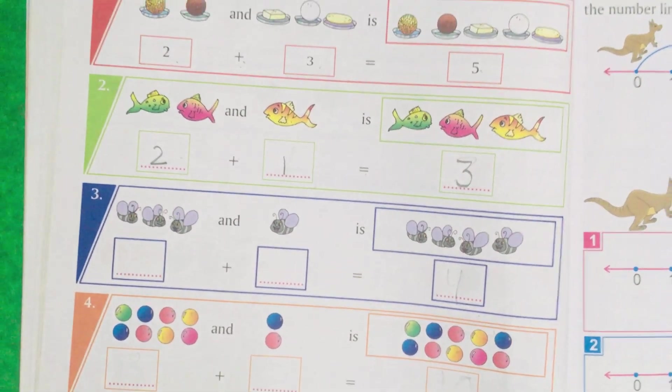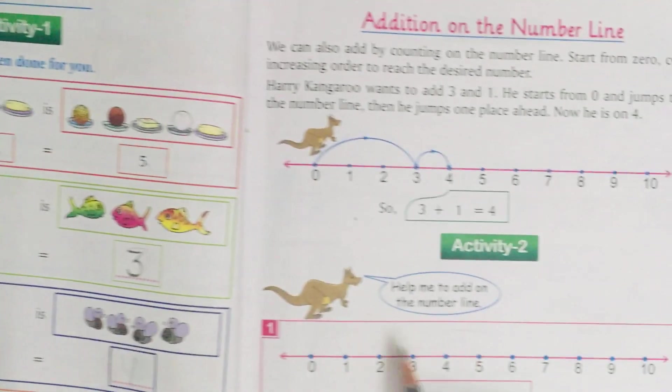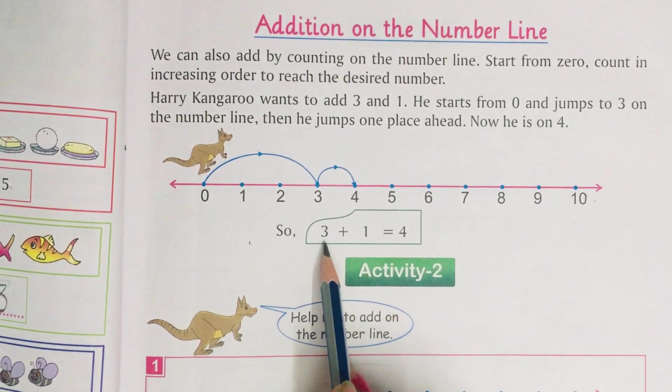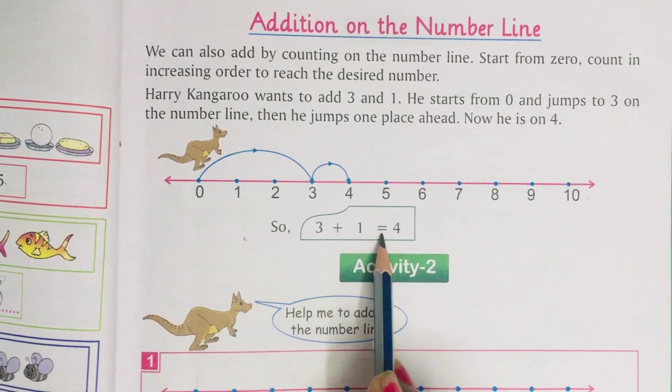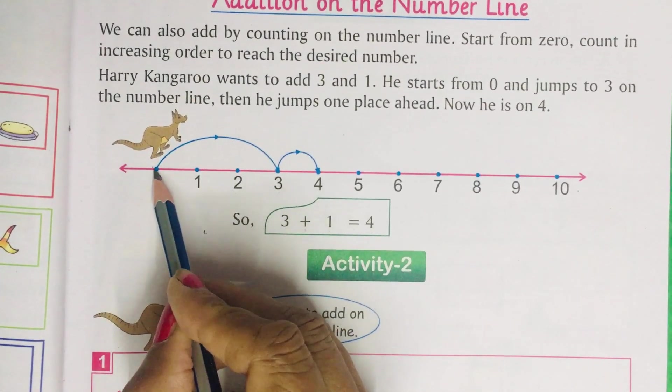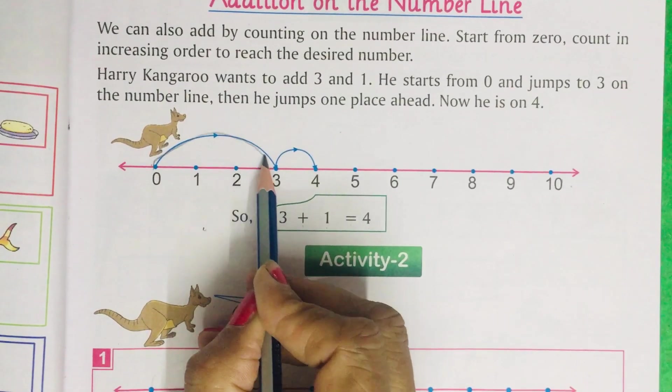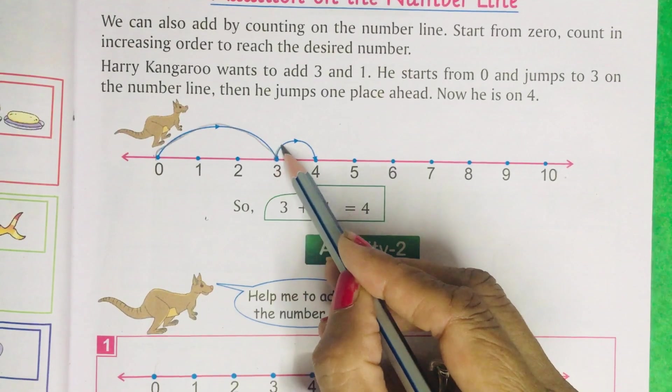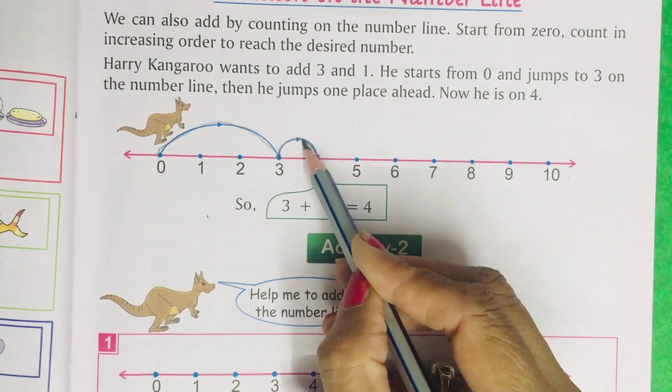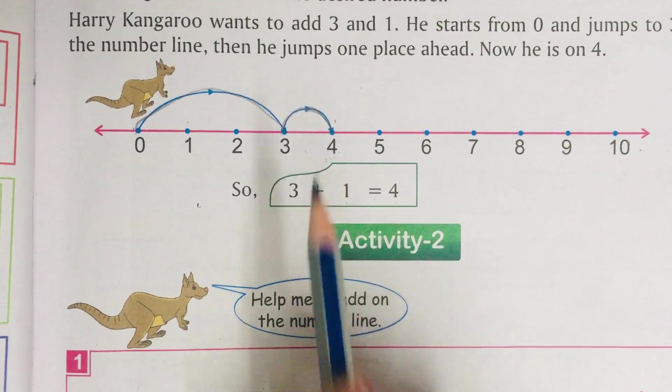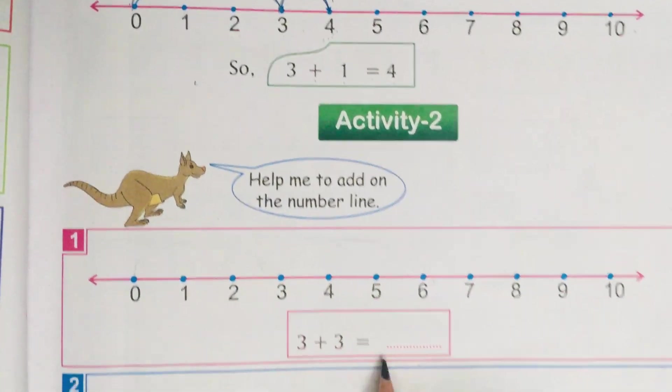Now, I will explain you about number line. This is number line. Then, if there is written 3 plus 1 equals to 4, that means from 0 to 3, we will move like this. Then, from 3 to 4, we will move like this. 1. This is 3 plus 1 equals to 4. I will do this sum for you.